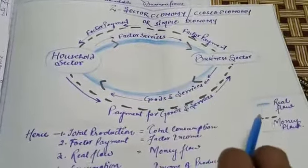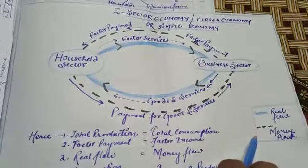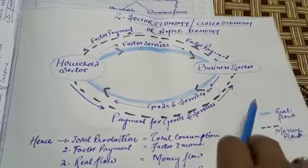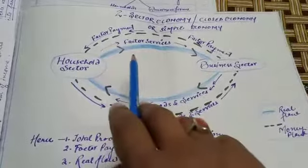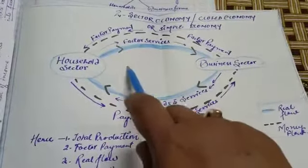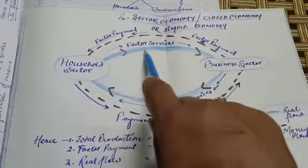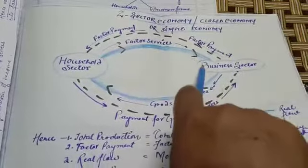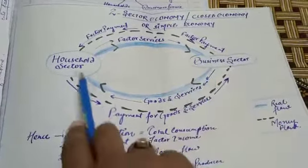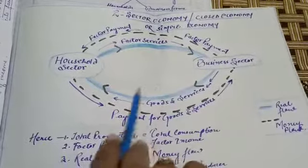So today we have understood two different types of flows: real flow and money flow. Real flow involves only the flow of physical things — like factor services, where household provides its physical efforts, and business sector provides goods and services. There is no monetary flow in real flow.